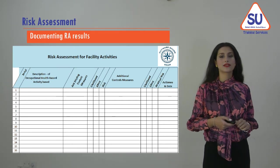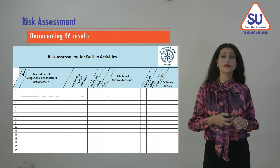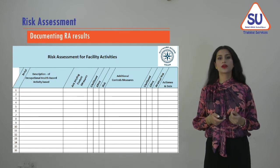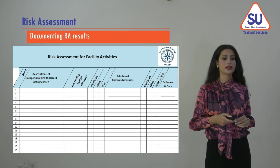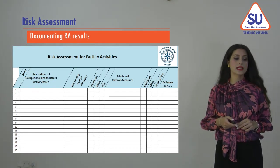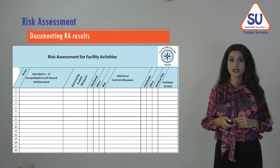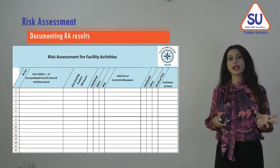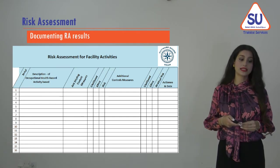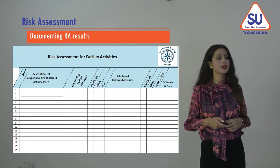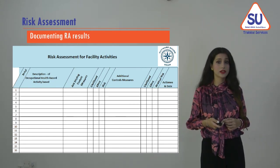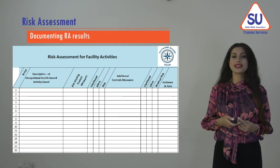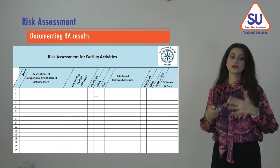There are several examples of templates and systems available for employers to record risk assessment findings. When recording, it's important to describe the assessed activity, existing control measures, level of likelihood, identified consequences, and the overall level of risk. It's also important to document any additional control measures being considered or implemented, and the residual risk. We would expect the likelihood, consequences, and level of risk to be reduced as a result.